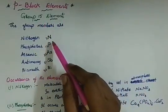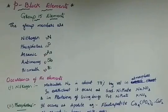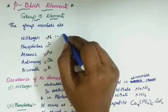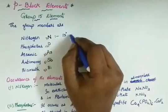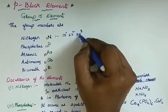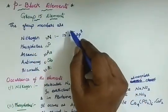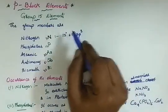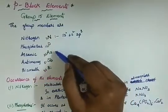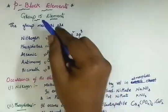As their outer electrons enter into the P-orbital, these belong to the P-Block. For example, nitrogen's electronic configuration with atomic number 7 is 1s2, 2s2, 2p3. So the P-orbital has electrons — therefore it belongs to the P-Block. They have 5 outer shell electrons, so they belong to the 15th group. The general electronic configuration for all these elements is ns2, np3.